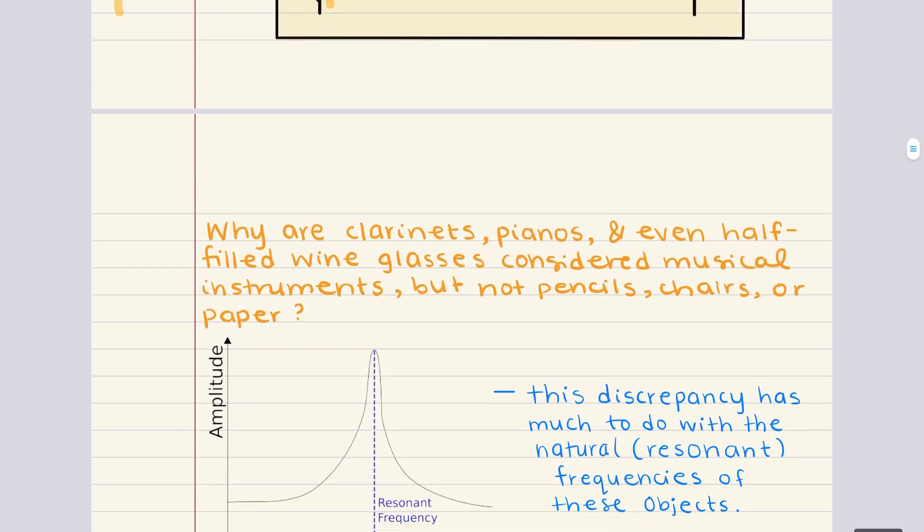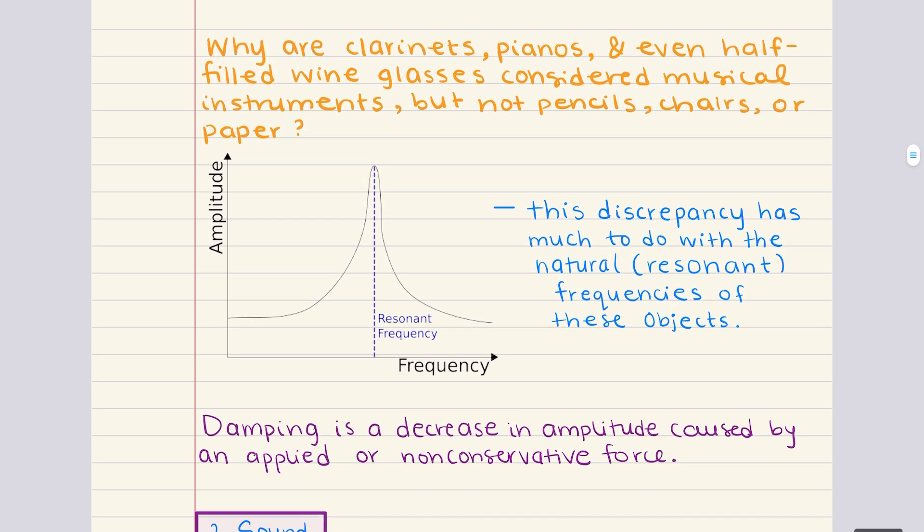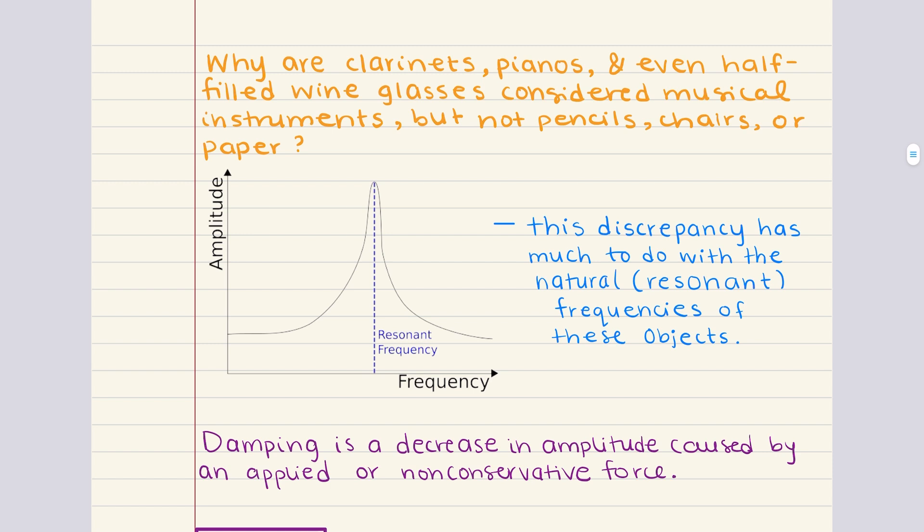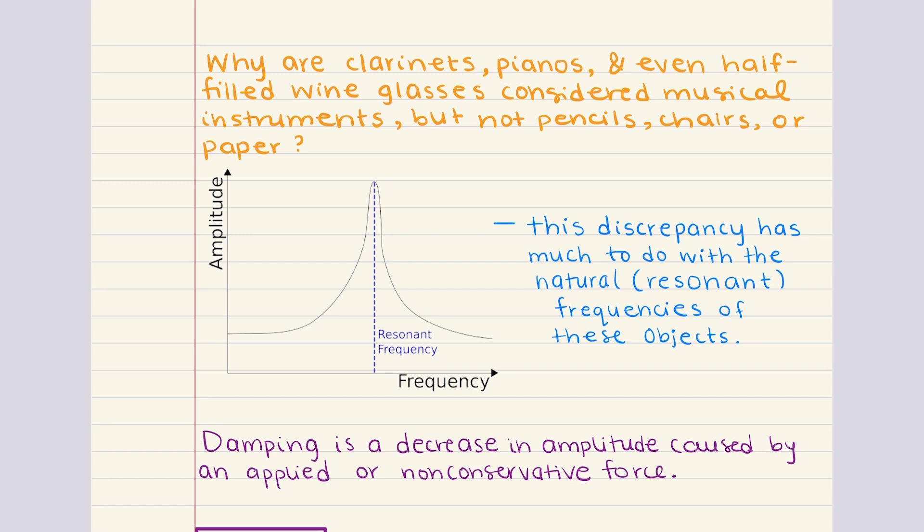Since we are on the topic, standing waves, they play an essential role in musical instruments. Specifically, standing waves are essential in musical instruments where vibrating strings or air columns create harmonic patterns that produce distinct sounds. These instruments rely on their ability to resonate at specific frequencies, and that brings up the topic of natural frequency and resonance.